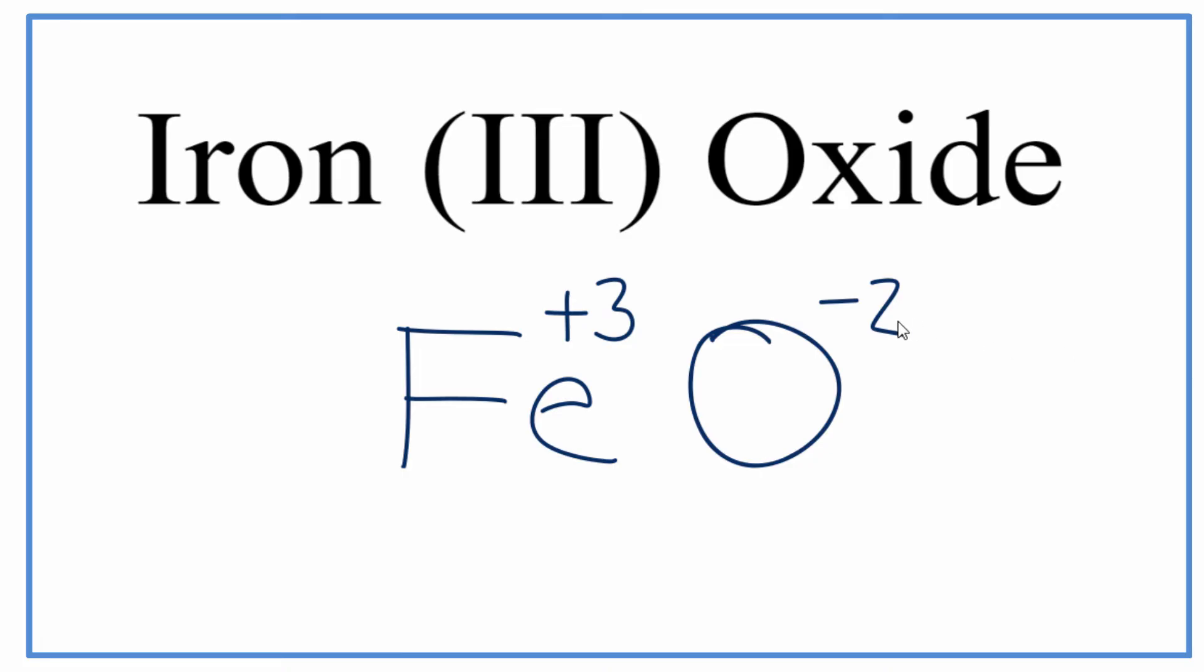We're going to take the charges and crisscross them. So we're going to move the 2, put it down here, and the 3 over here. And then we can get rid of the plus and minus.